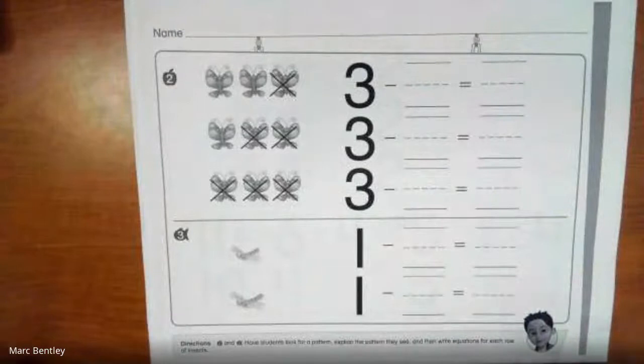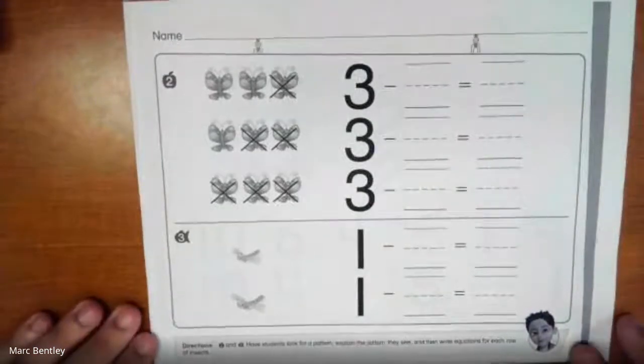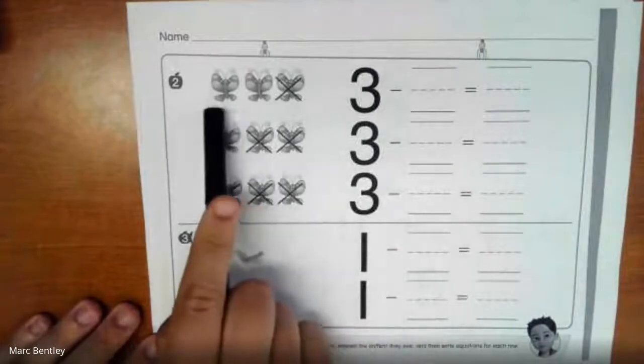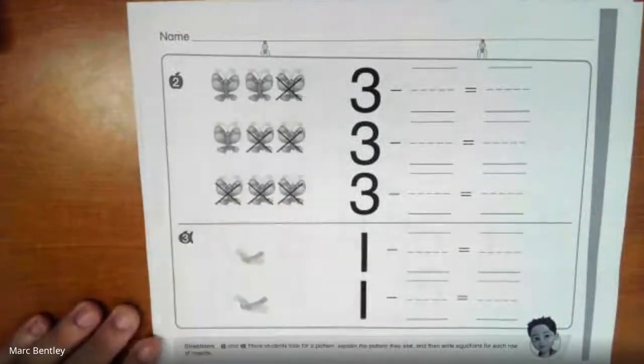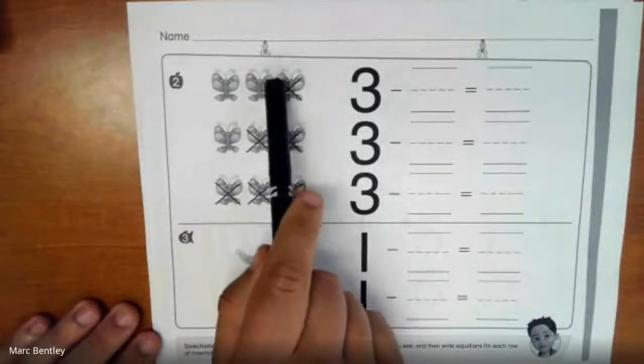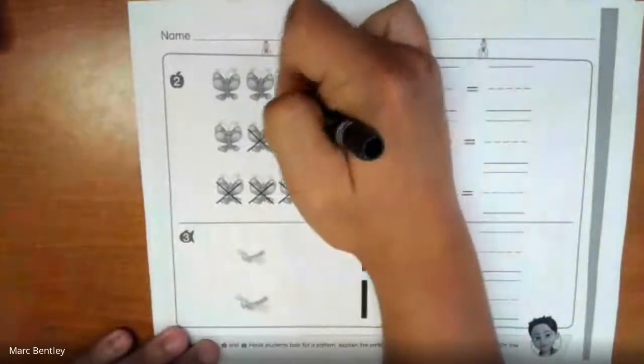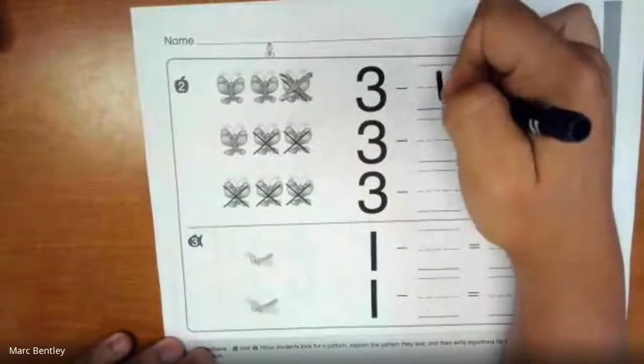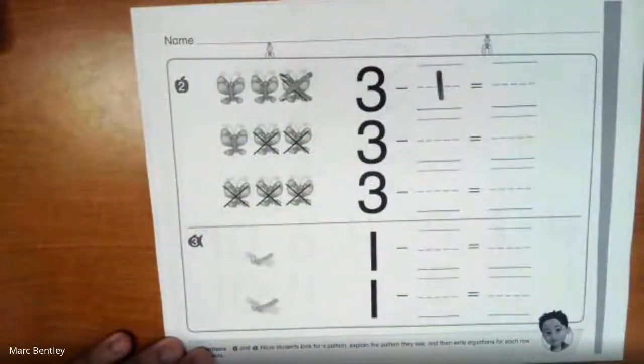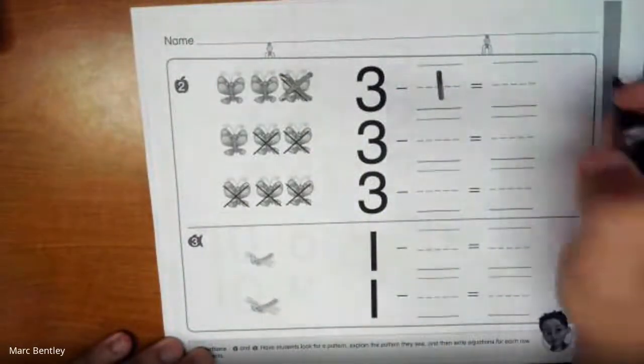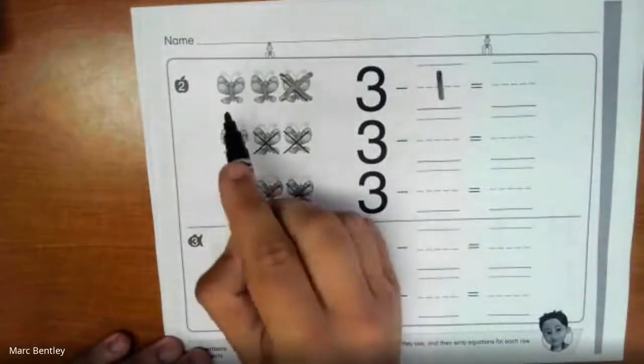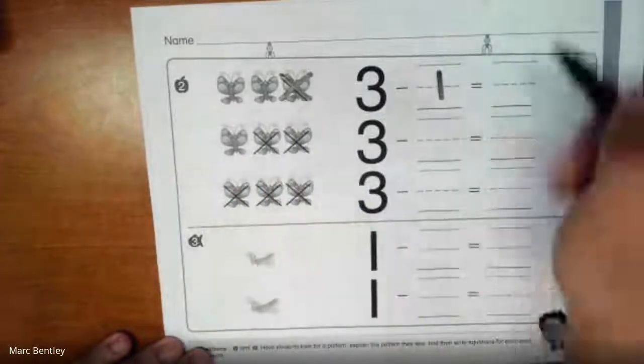Okay, over here we have some butterflies. So I started off with 3 butterflies and I'm taking away one of them. You see the cross is through. I'm going to make it a little bit more clear. 3 minus 1 equals, how many do I have left? We've got 2 left. So 3 minus 1 is 2.